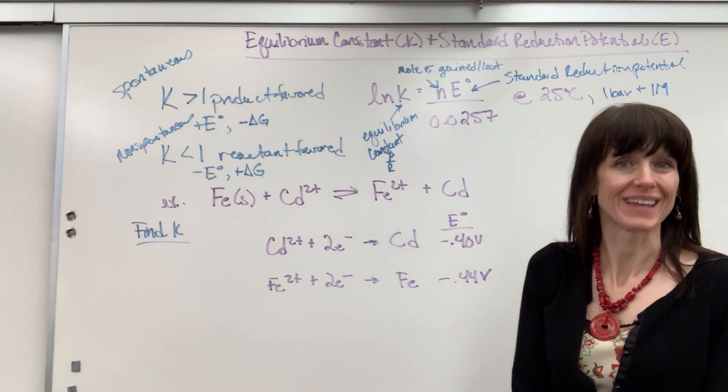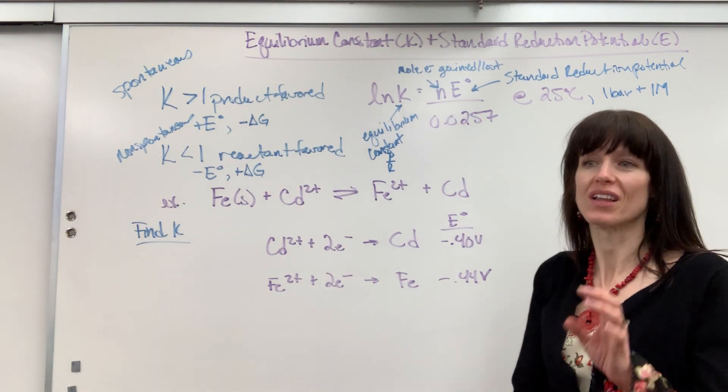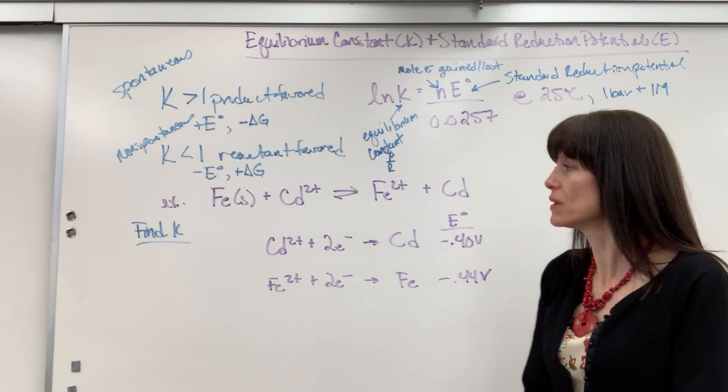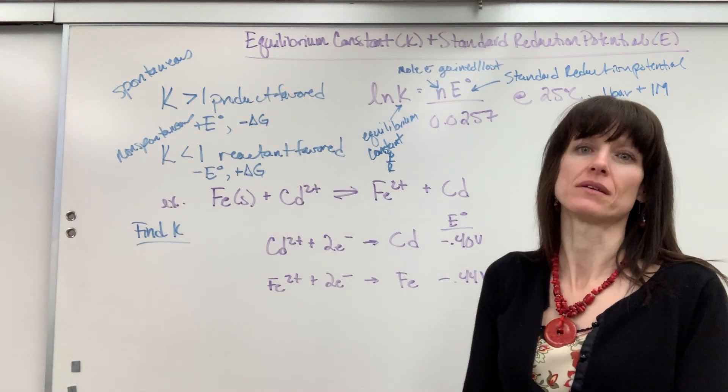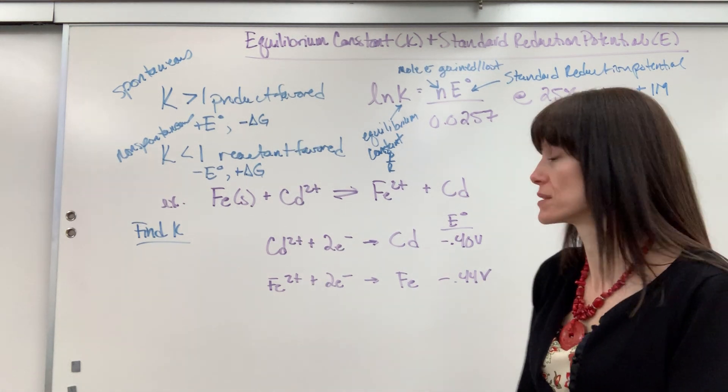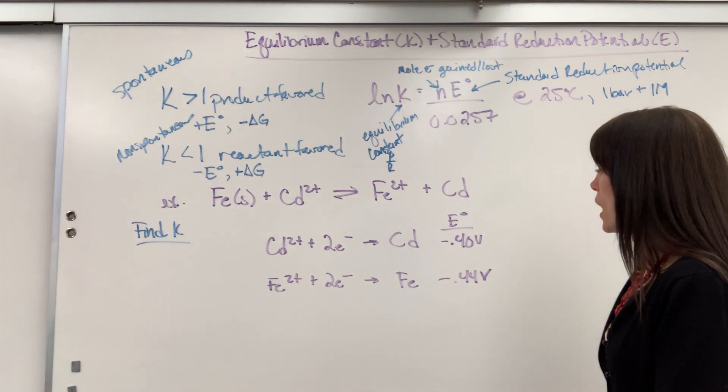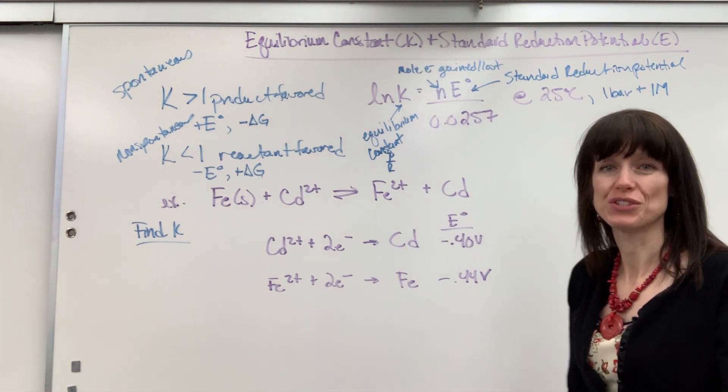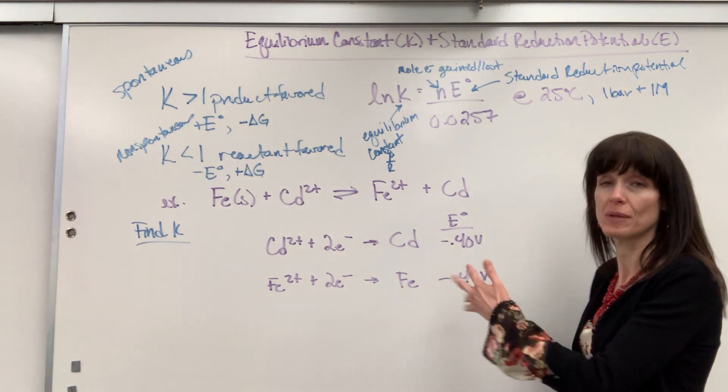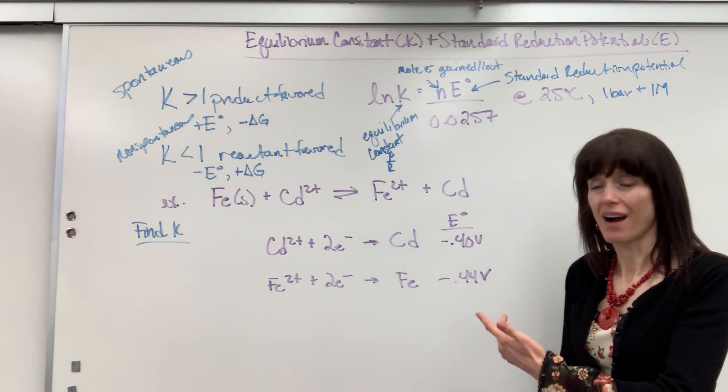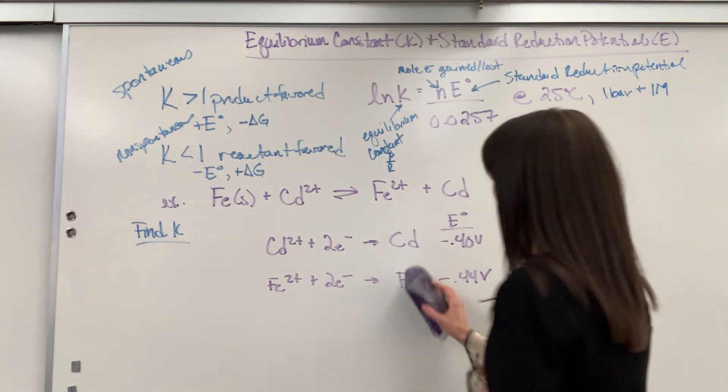This is going to be for a voltaic cell. Remember, we want the largest positive value possible. If it said electrolytic, we want the largest negative value possible. So this is voltaic, also called galvanic. Our little trick is you find the most negative number and you flip it. You change that to oxidation.